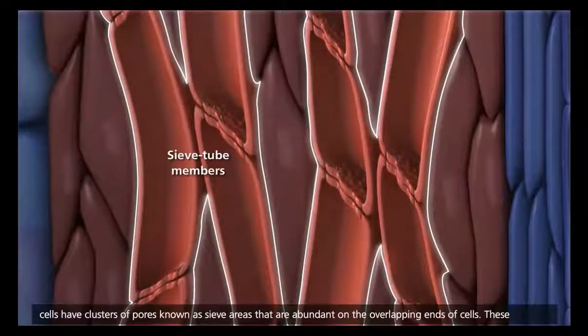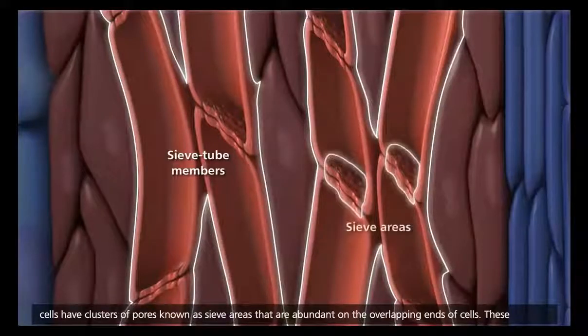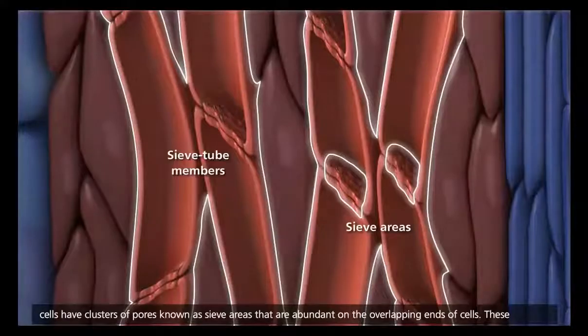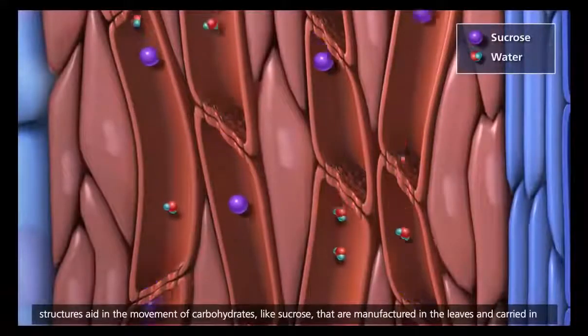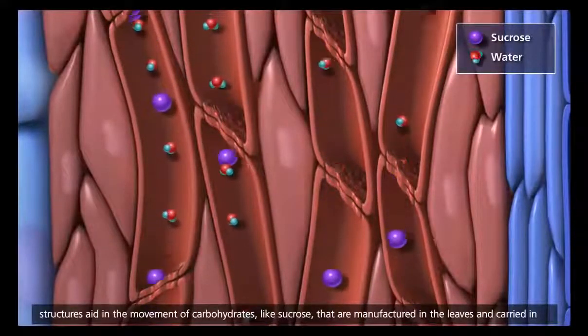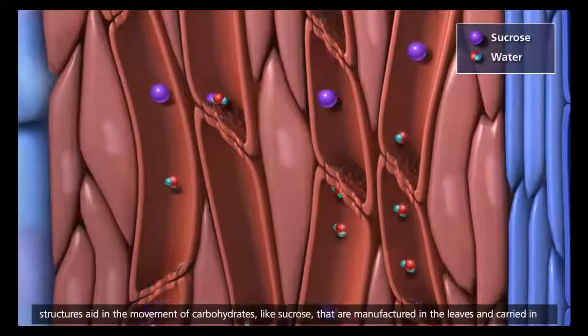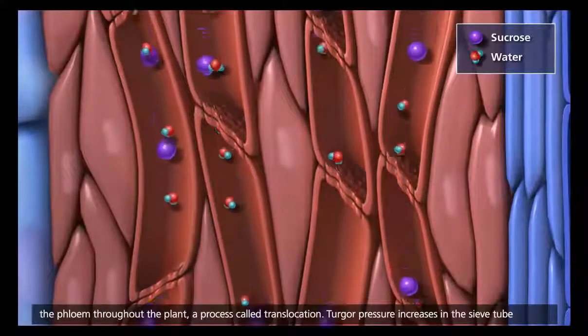Both types of cells have clusters of pores known as sieve areas that are abundant on the overlapping ends of cells. These structures aid in the movement of carbohydrates, like sucrose, that are manufactured in the leaves and carried in the phloem throughout the plant, a process called translocation.